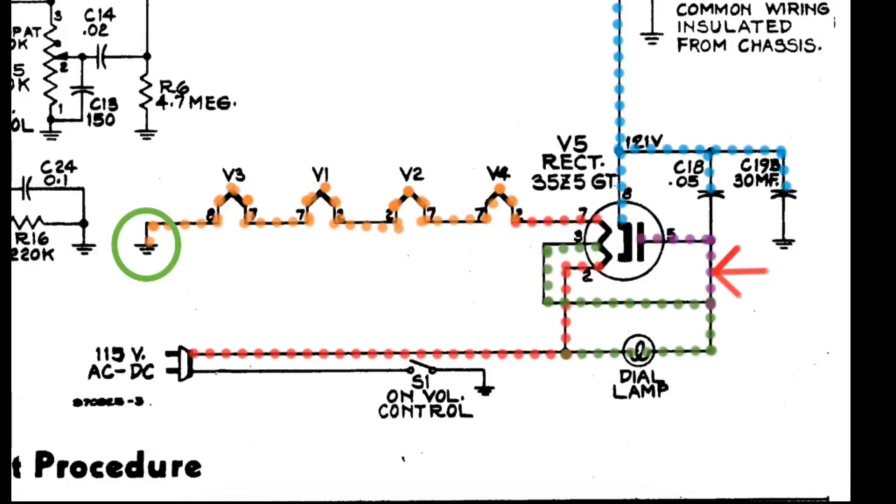Let's talk about troubleshooting real quick. Of course, cold solder joints would be an issue. Tube failures with an open filament would be very common, and you can simply just check those using your digital multimeter looking at DC resistance and checking between the pins that are called out to make sure that you have DC resistance between those points.